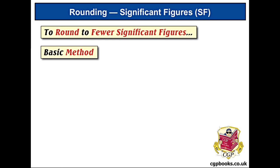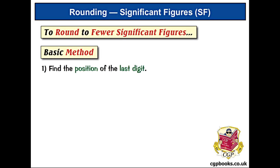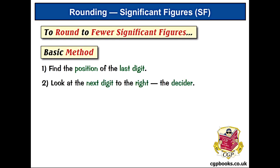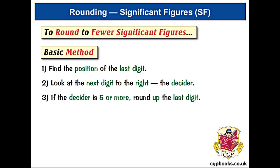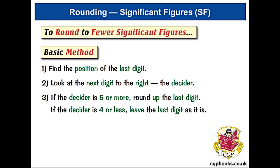Here's the basic method. First, find the position of the last digit — that's where you want the last significant figure to be. Then look at the next digit along to the right; this is the decider. If the decider is five or more, round up the last digit. But if it's four or less, leave the last digit as it is.